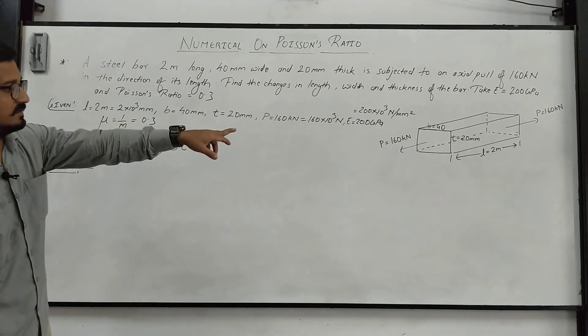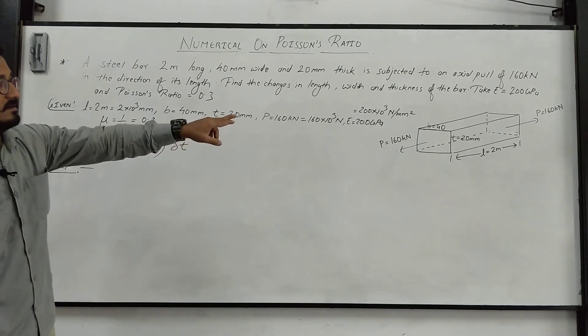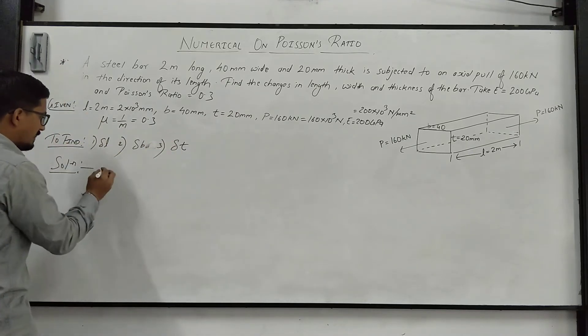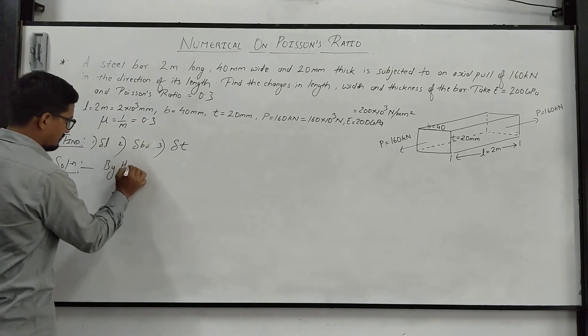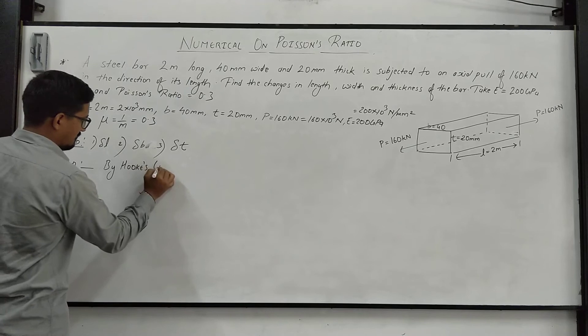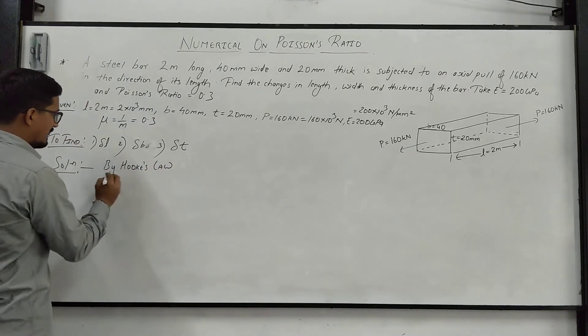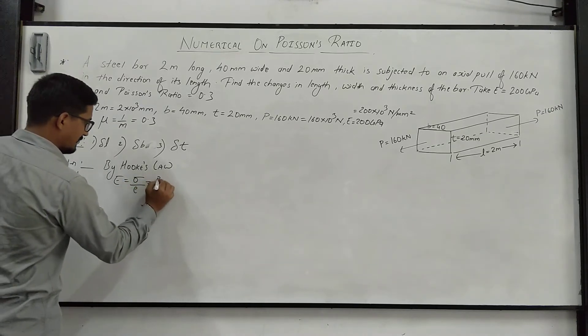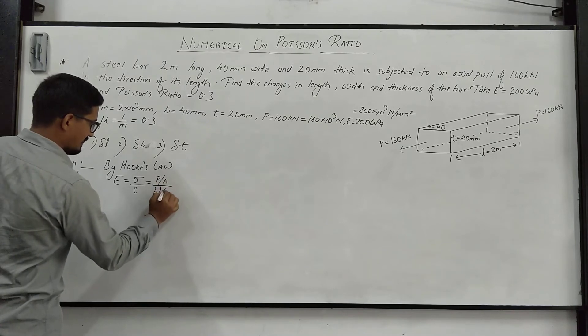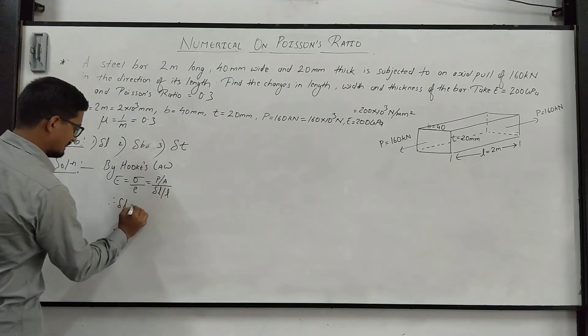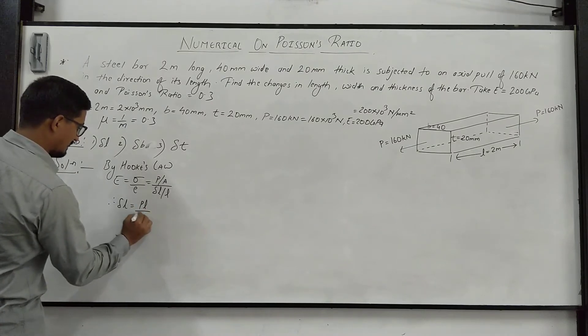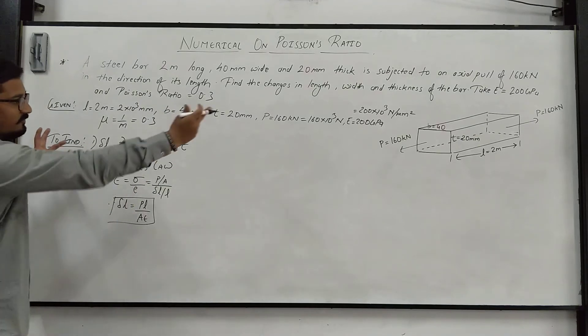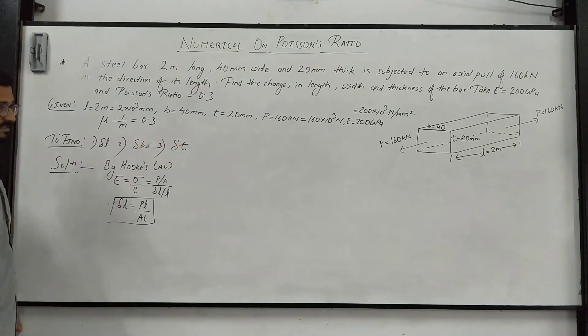Change in length, we can see under the action of this load 160 kN axial tensile load, this bar will get stretched, means length will increase. So by Hooke's law, we know that E is equal to sigma by epsilon. Therefore, if we put P by A and epsilon delta L by L, therefore delta L is equal to PL by AE. From this equation we can find out the change in length or the elongation of the bar due to the tensile load of 160 kN.